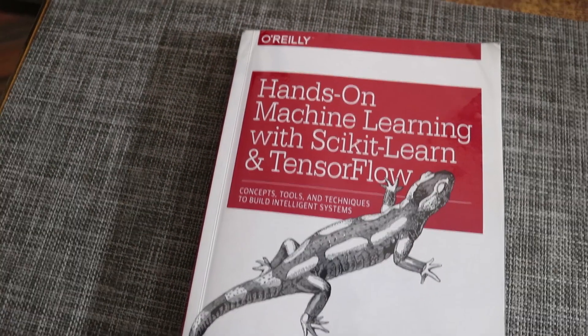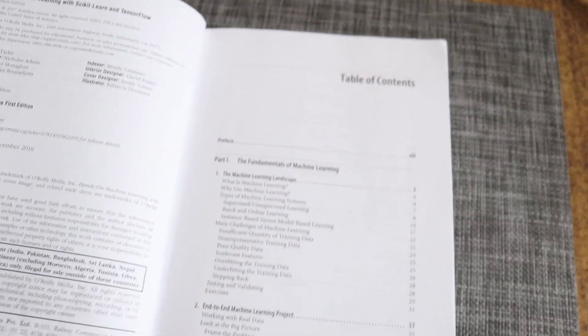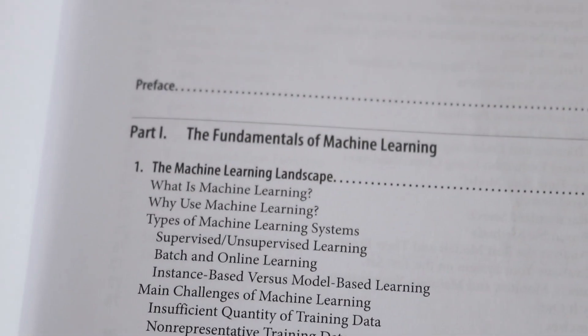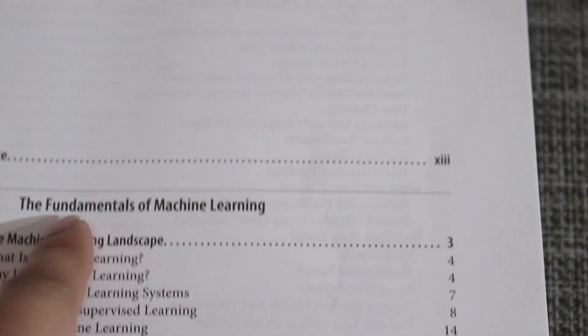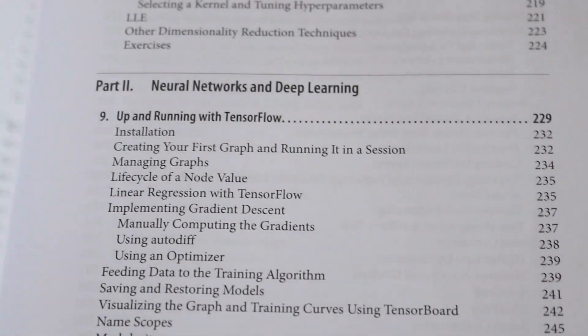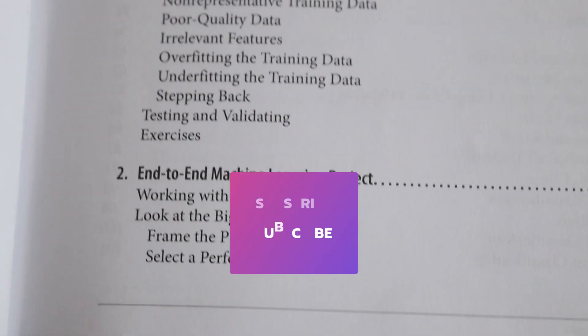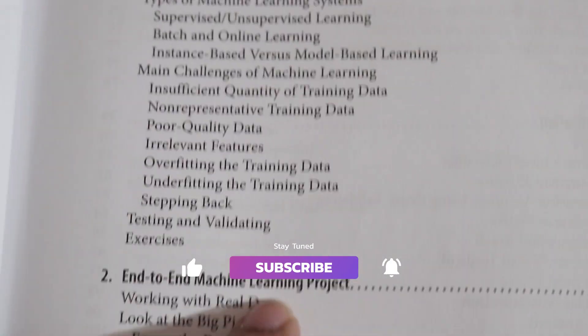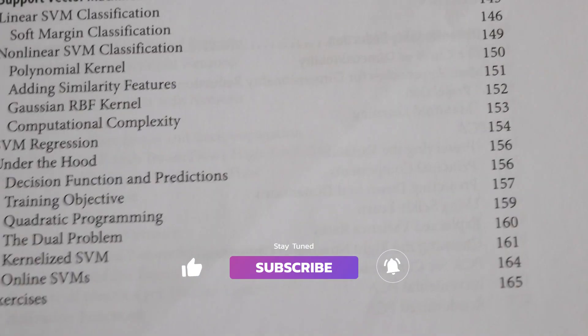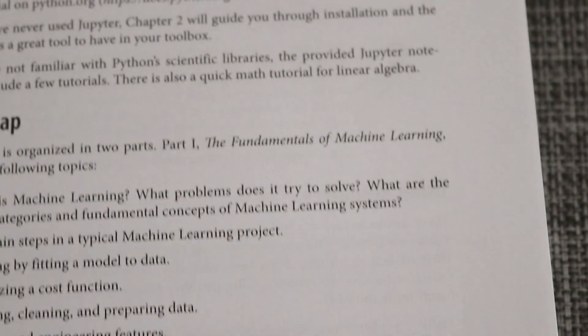I have this book now, so let's first look at the table of contents. Basically, this book is divided into two parts: the first one is 'Fundamentals of Machine Learning' and the second one is 'Neural Networks and Deep Learning.' The first part covers the machine learning landscape and an end-to-end project. Before diving in, I want to look at the pages that talk about the prerequisites of this book.